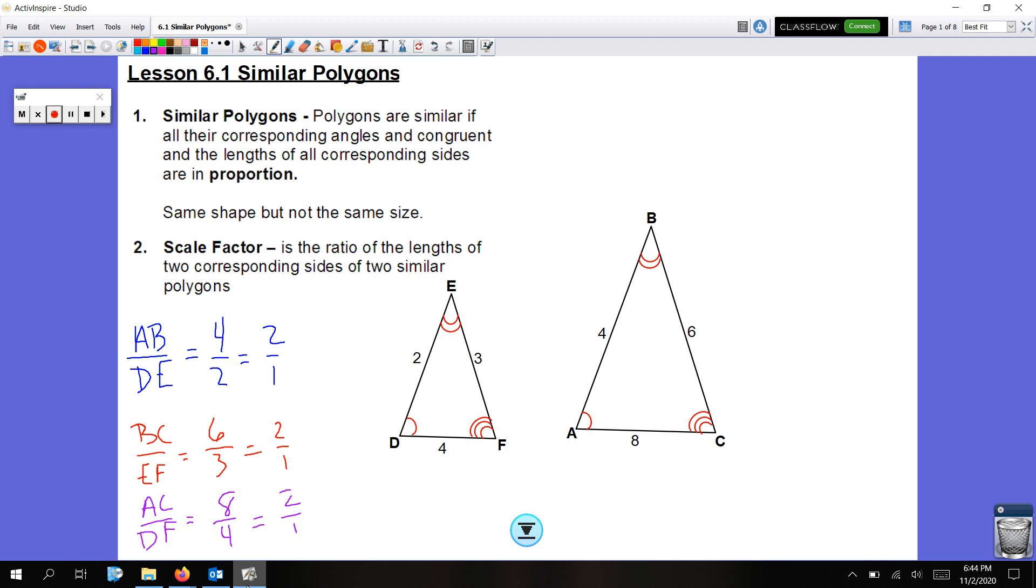So I can say triangle ABC is similar to triangle DEF. Similar is different than congruent, it just has that little squiggly. I want to make sure I name the second triangle in the correct order. So since I started with A, I'm going to start with D, E, F. Order matters. You want to make sure that angle A corresponds to D, B corresponds to E, and C corresponds to F.